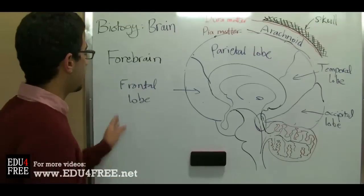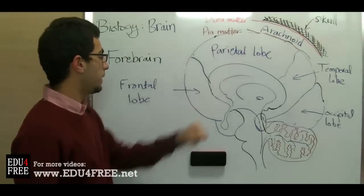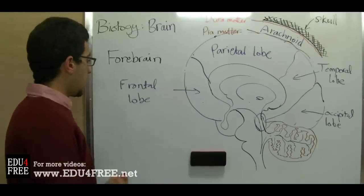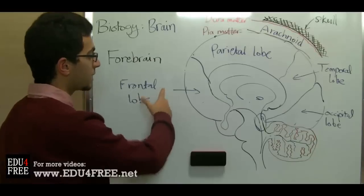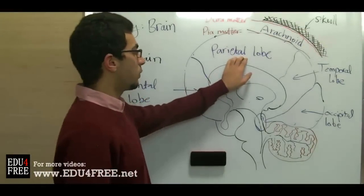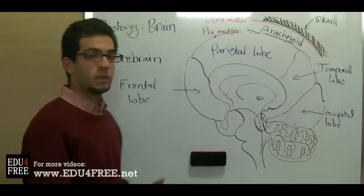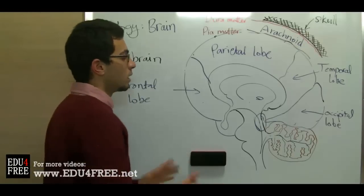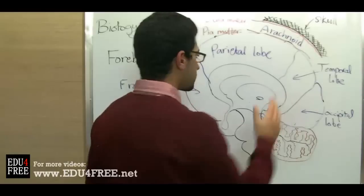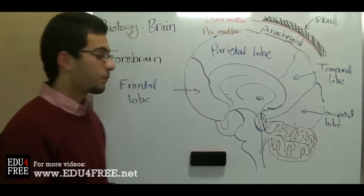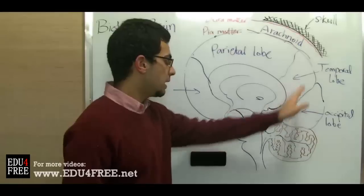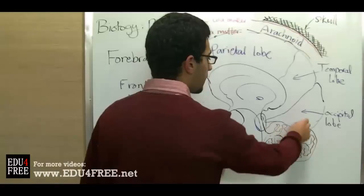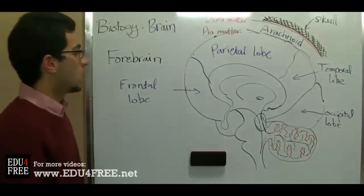Now we'll talk about the functions of each lobe. In the frontal lobe, we have the voluntary functions like movement, and we have centers of memory and speech. In the parietal lobe, we have centers of senses related to skin, like the sense of touch, sense of heat, coldness, and all of that. In the temporal lobe, we have centers of speech in addition to smell. And in the occipital lobe, we have the centers of vision.